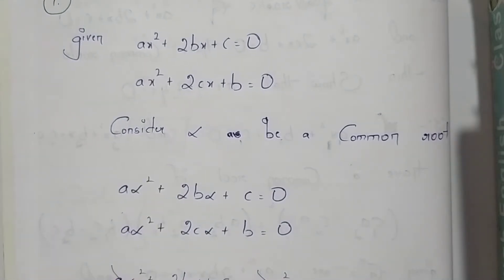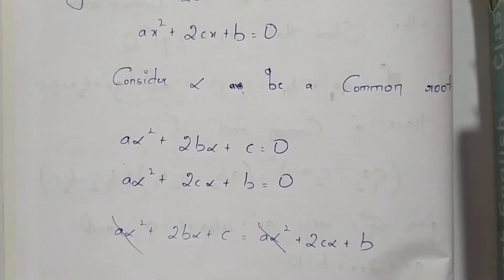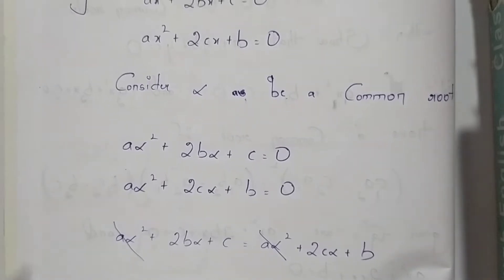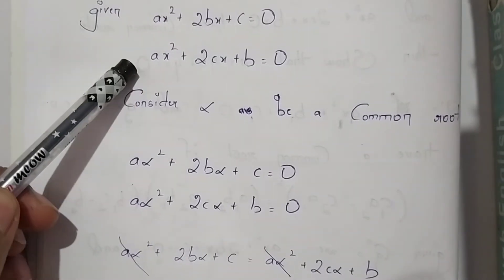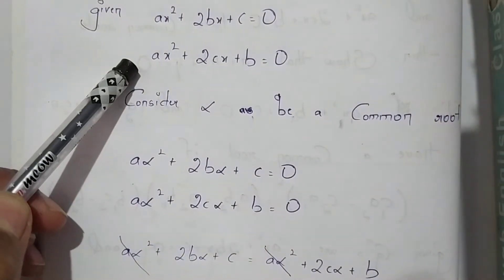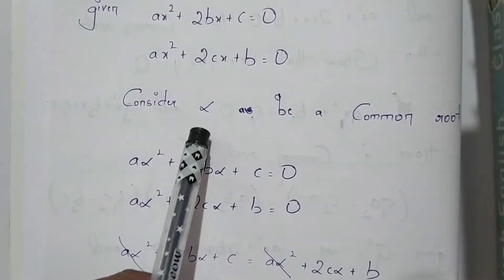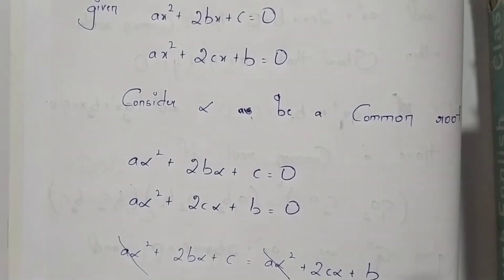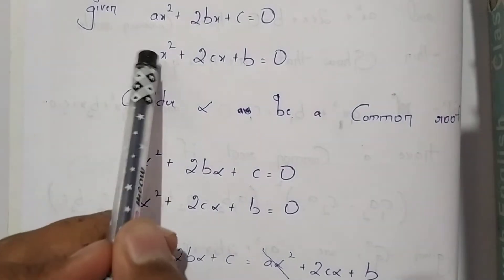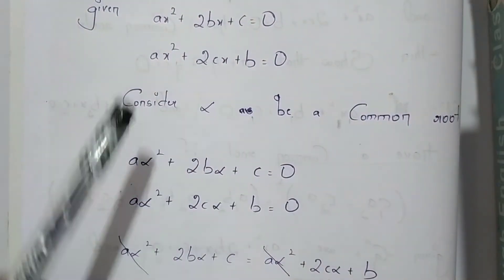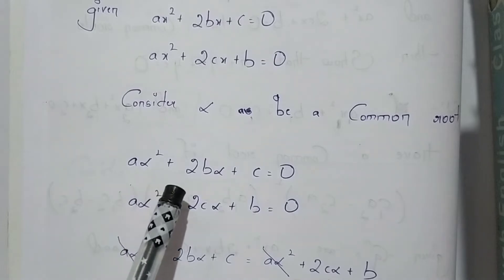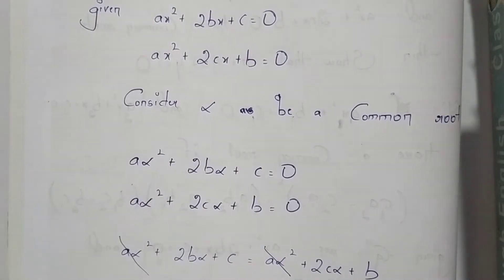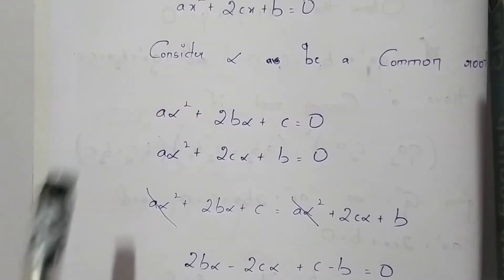Therefore we consider alpha to be the common root of these two equations. If alpha is a common root, then it must satisfy both equations. On substituting the value of alpha in these two equations, we will get: